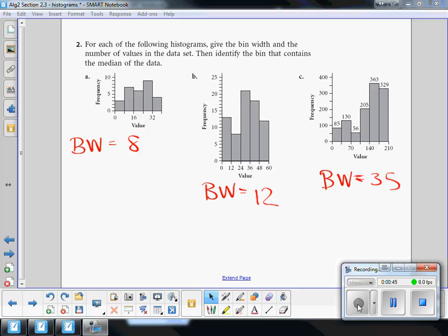Now, we want the number of values in the data set. Here's what you need to do. Here's what I like to do either at the top or inside each bar. Put how many are there. There are how many here? 3, then? 7 there. Then the next one has 6, then?